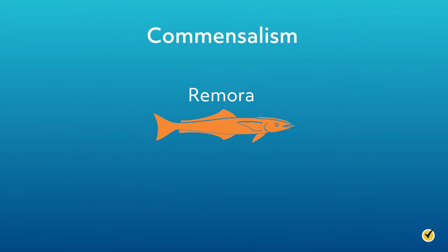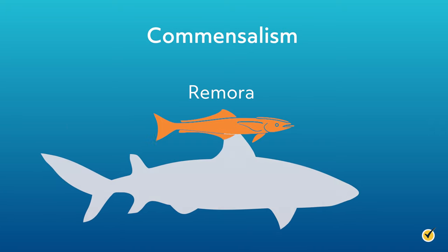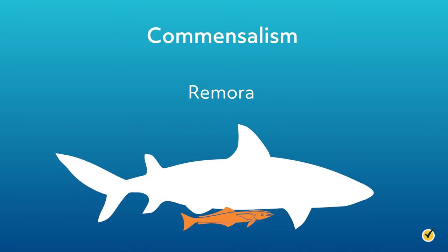Another example of commensalism is one organism using another as a means of transportation. A lot of insects, fish, and other animals use each other in this way, but a good example is the remora. This is a type of sucker fish that will attach itself to sharks and other big fish to catch an underwater ride. This in and of itself is an example of commensalism since only the remora really benefits, but this relationship can change to mutualism when the remora feed on the parasites on the backs of these big fish.